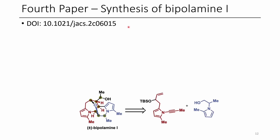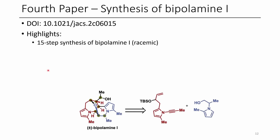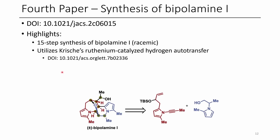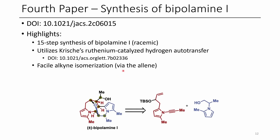The fourth paper is the synthesis of bipolar amine-1 from Jacs. Highlights include a 15-step racemic synthesis, the use of Creche's ruthenium-catalyzed hydrogen autotransfer reaction, and a nice alkyne isomerization that goes through the allene.